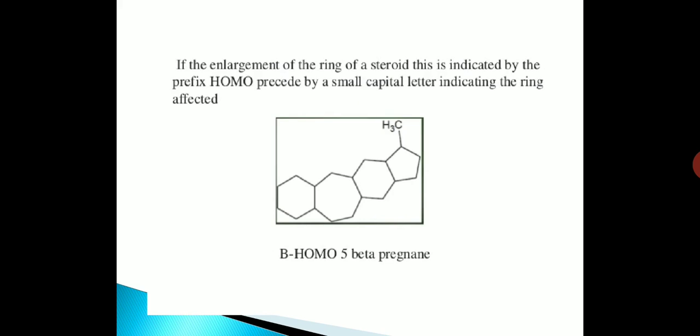If there is an enlargement of a ring in a steroid, this is indicated by the prefix 'homo', preceded by a small capital letter indicating the ring affected. Here I have shown the example B-homo-5-beta.